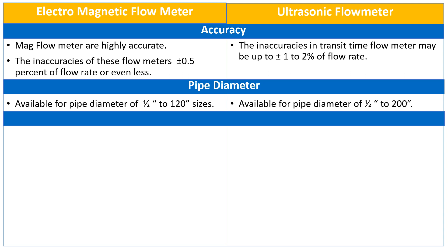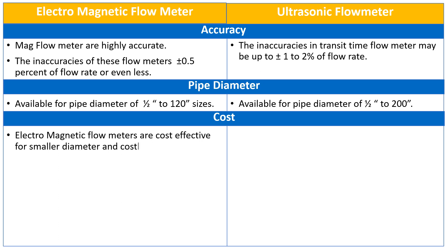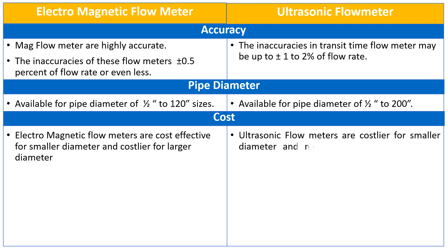Finally, we will discuss the cost of both flow meters. The electromagnetic flow meters are cost effective for smaller diameter pipes and costlier for larger diameter pipes, while the ultrasonic flow meters are costlier for smaller diameter pipes and more cost effective for larger diameter pipes.